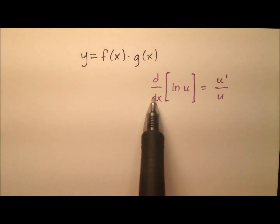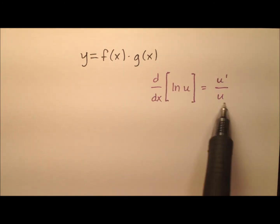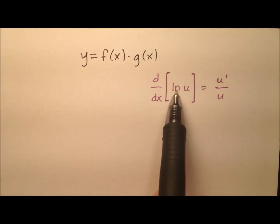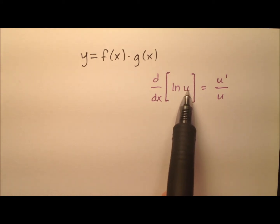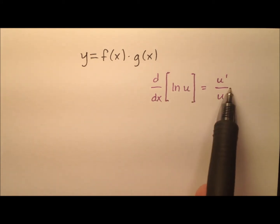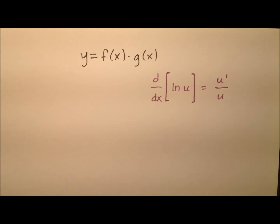I've also included this derivative rule — it's the derivative for the natural log of some function u, and that's going to be u prime over u, and we'll use that a couple of times here.